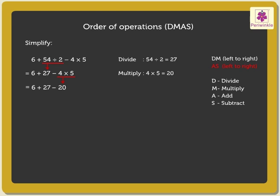Now, we add or subtract, whichever comes first, in order from left to right. So, the next step is to add. That is, 6 plus 27, which is equal to 33.